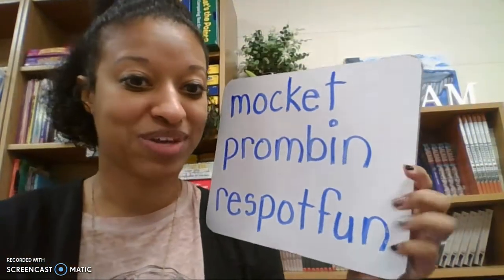Now let's look at the fake words that we did last time. I want you to write them on your board again because you've probably erased them since last time. Please get out your whiteboard marker and eraser — pause the video if you need to. I'm going to spell the words again so you can write them on your board. Ready? First word: M-O-C-K-E-T. Second word: P-R-O-M-B-I-N. Third word: R-E-S-P-O-T-F-U-N. Remember, pause me if I'm ever going too fast — that's the beauty of having a video.